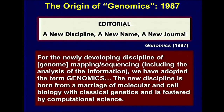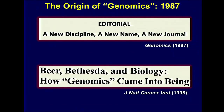A little deeper digging revealed that a workshop sponsored by NIH here in Bethesda played a major role. A historical piece in the Journal of the National Cancer Institute described a workshop where Thomas Roderick at the Jackson Labs was a participant. Over beer one evening after the workshop, he was attributed to coming up with the name — 'we need a name for this new emerging area of comprehensively studying the DNA of organisms' — and the word 'genomics' was born.